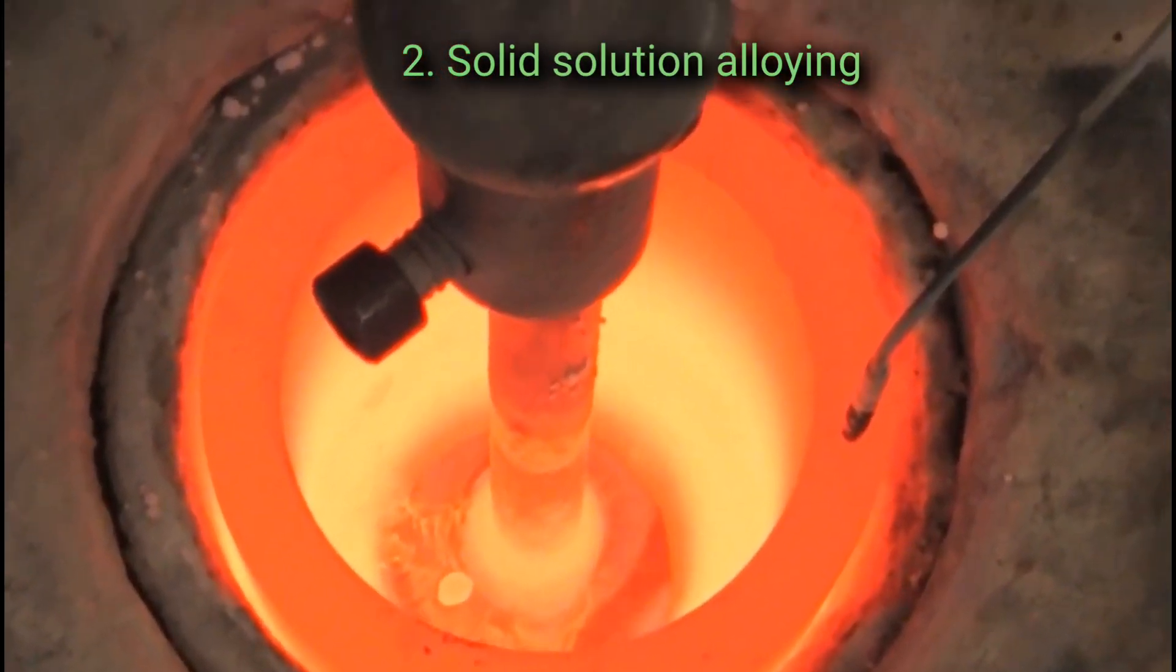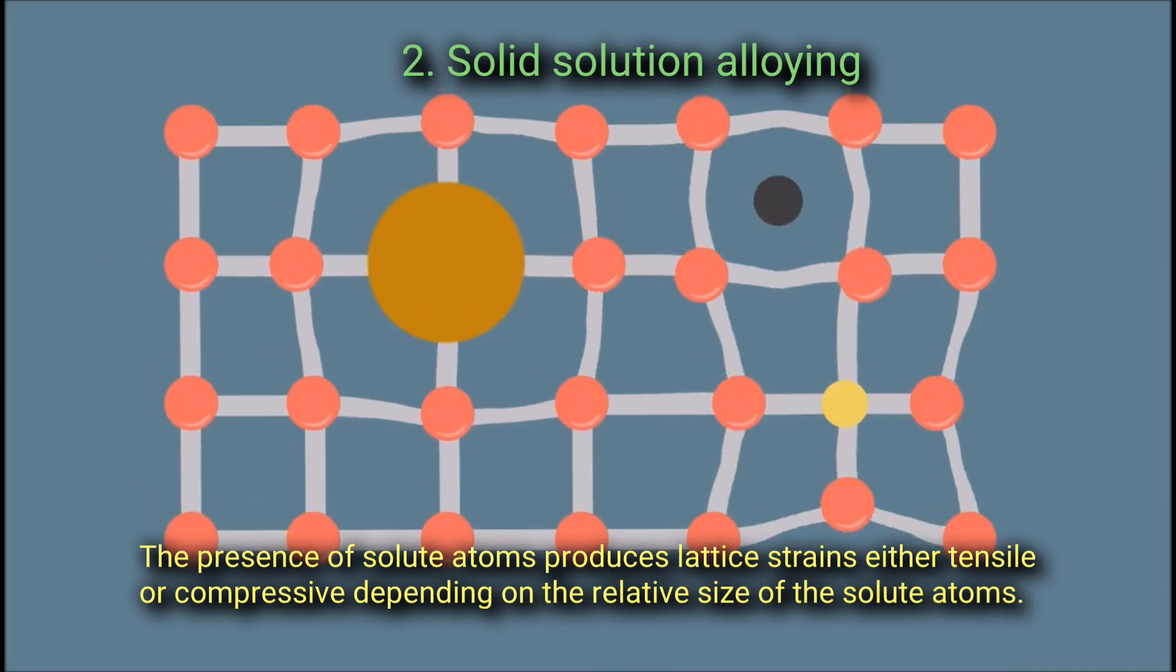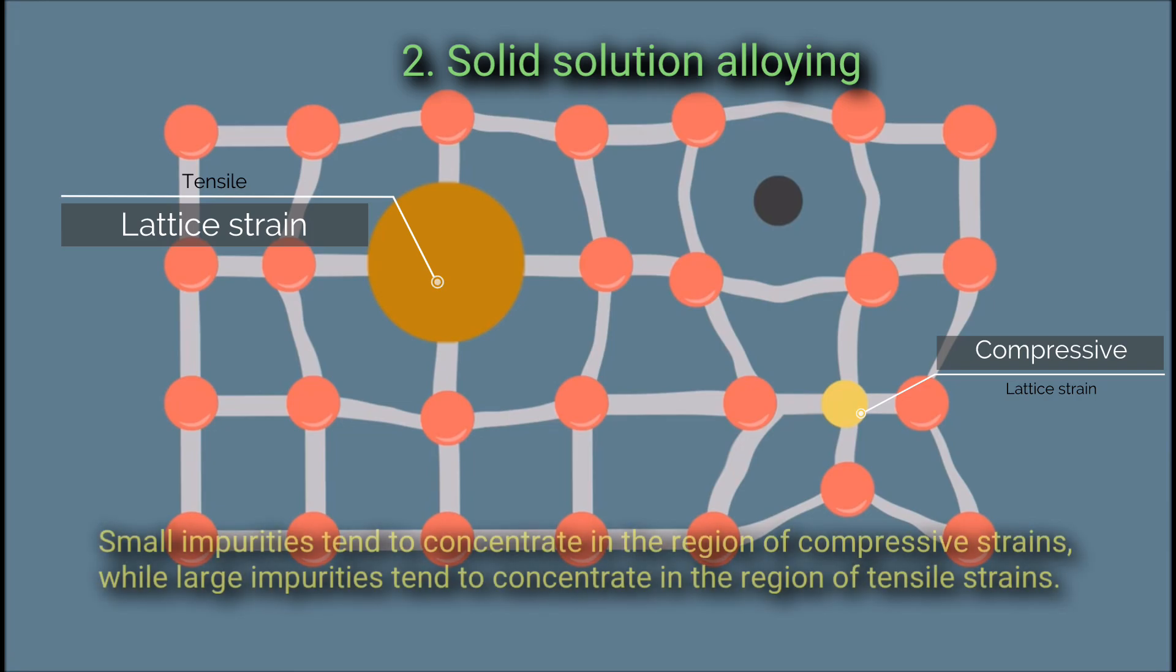Solid solution alloying: The presence of solute atoms produces lattice strains, either tensile or compressive, depending on the relative size of the solute atoms. Small impurities tend to concentrate at regions of compressive strains, while large impurities tend to concentrate in the region of tensile strains.